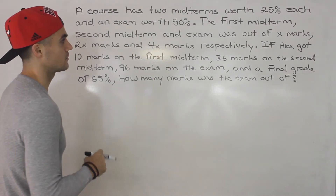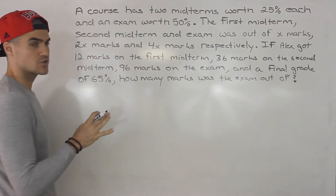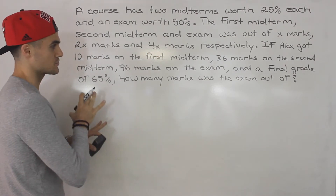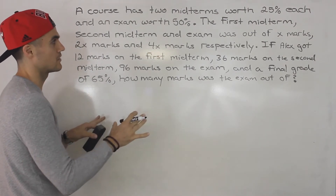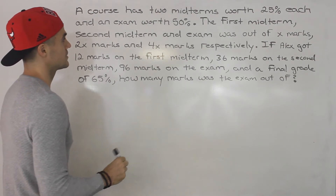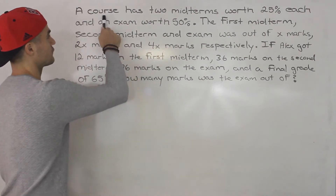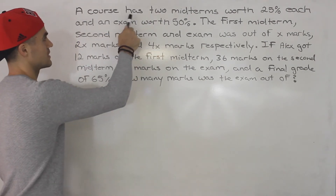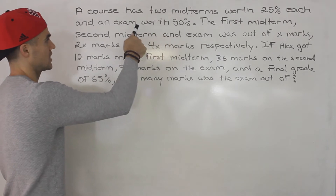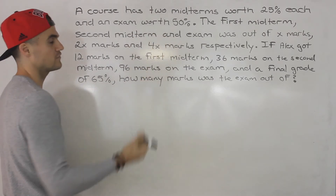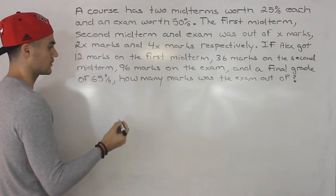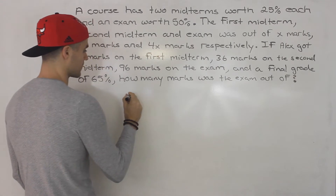There's lots going on in this question. The algebra is actually not too difficult — it's more so just about setting up the equation to solve. So let's start off with the first sentence. If a course has two midterms worth 25% each and an exam worth 50%, how can you calculate the final mark?